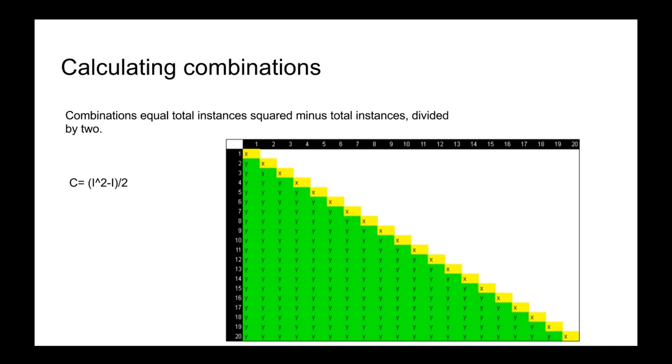There are other methods to getting to this. You can add up 20 plus 19 plus 18 plus 17. You can do that too. That's a different method. But this is the most compact method that anything you have to combine with anything else, you can immediately find out the number of combinations you have to deal with just by calculating this number.